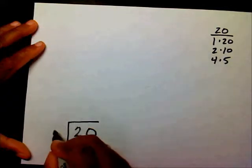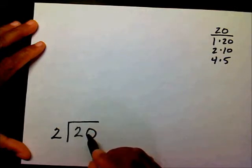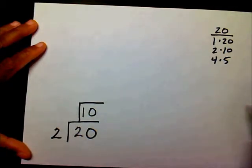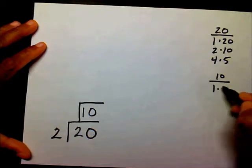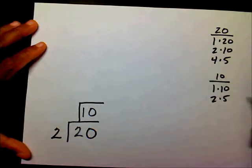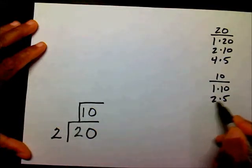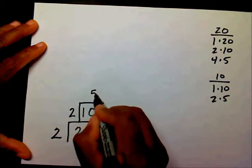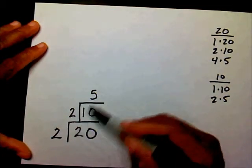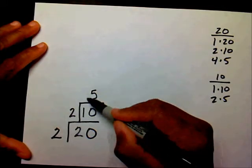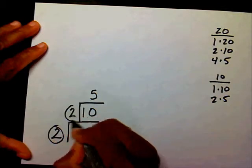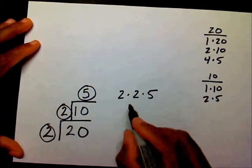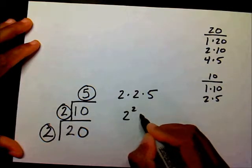2 is a prime number, so I'm going to put my 2 right here. 2 times what will give me 20? That's 10. Put my 10 on top and draw another step. The factors of 10 are 1 and 10, and 2 and 5. I can choose either prime number and place it on the outside. 2 times 5 gives me 10. My ladder or steps are finished when I have a prime number at the top. So I have a 2, a 2, and a 5. Therefore, the prime factorization is 2 times 2 times 5, or simplified: 2 to the second power times 5.